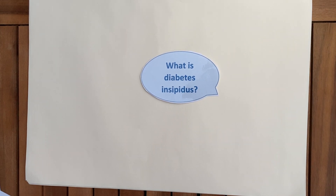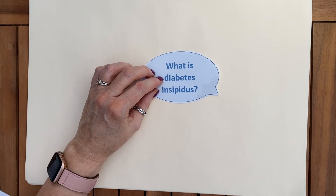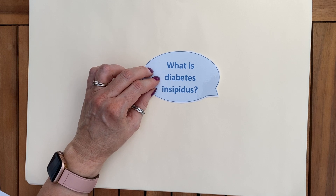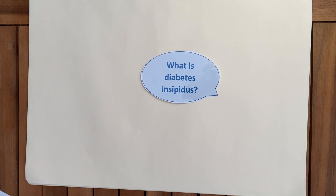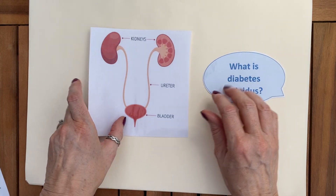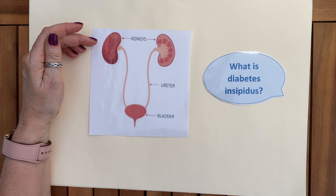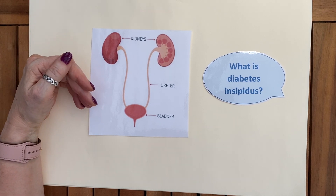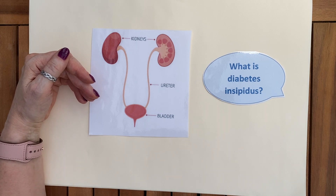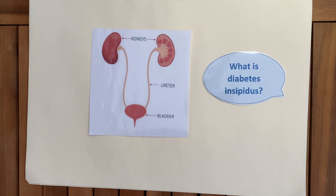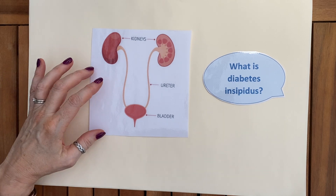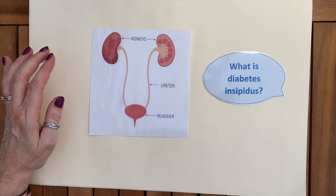Moving on — what is diabetes insipidus? It is included here because it relates to the water balance mechanism. It is a health condition and nothing to do with the other diabetes, which involves insulin — so it is not type one or type two diabetes, even though the name is a little misleading. It is actually a condition where the body does not produce or release enough anti-diuretic hormone (ADH). ADH works directly with the kidneys to either retain more fluid or urinate more fluid out. When this mechanism malfunctions, the osmoregulation fails and the body loses too much fluid.